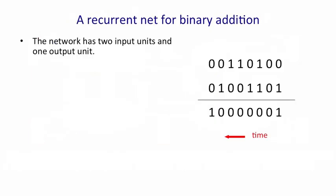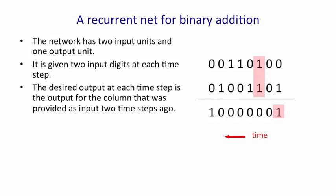So a recurrent neural net for binary addition needs to have two input units and one output unit. It's given two input digits at each time step. And it also has to produce an output at each time step. And the output is the output for the column that it took in two time steps ago.